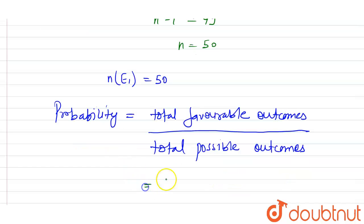Now if we see here total favorable outcomes is 50 and total possible outcomes are 100. So this is equals to 1 by 2. So the probability that the number is even is 1 by 2.